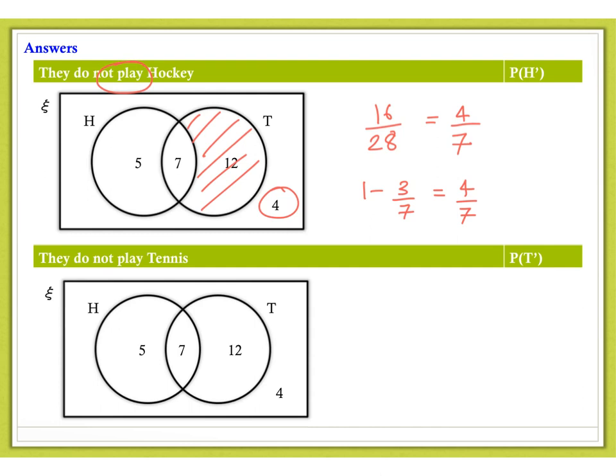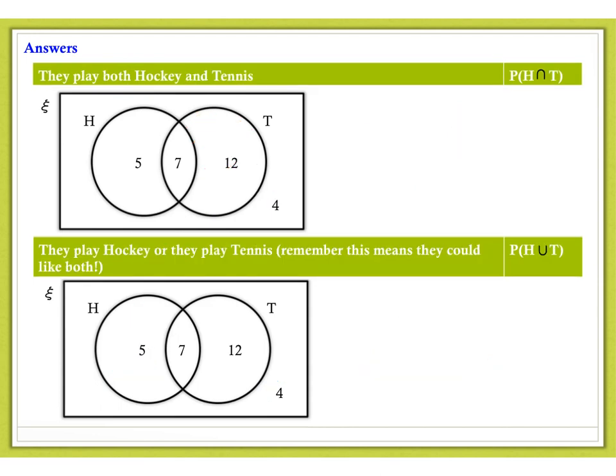The probability that they do not play tennis. So, that refers to everybody here and here. So, that's 9 out of 28. And again, that's one takeaway, the 19 out of 28 people who did play tennis. What is the probability that they play hockey and tennis? So, of course, that refers to the intersection. So, that's 7 out of 28, which is a quarter.